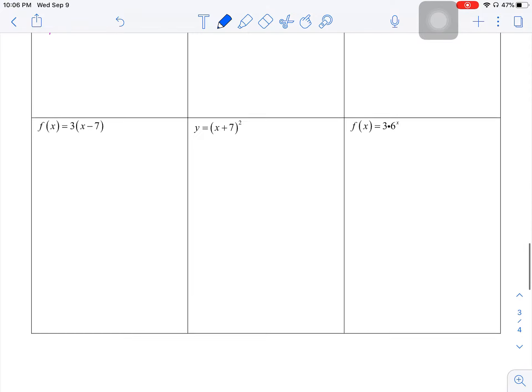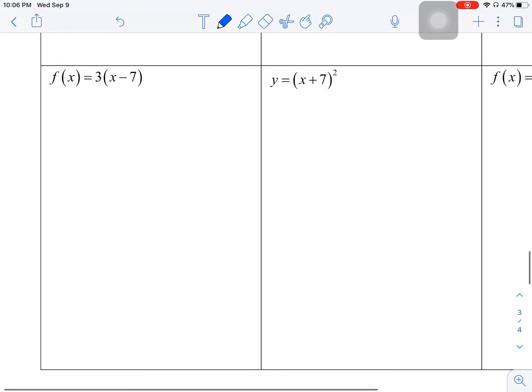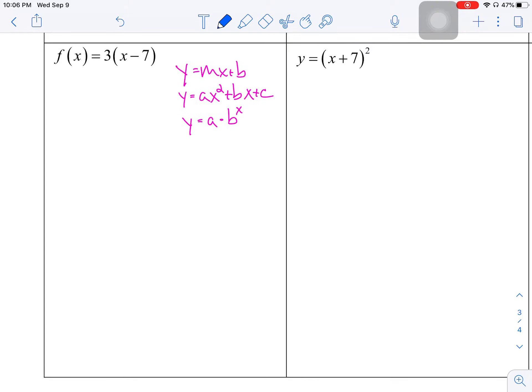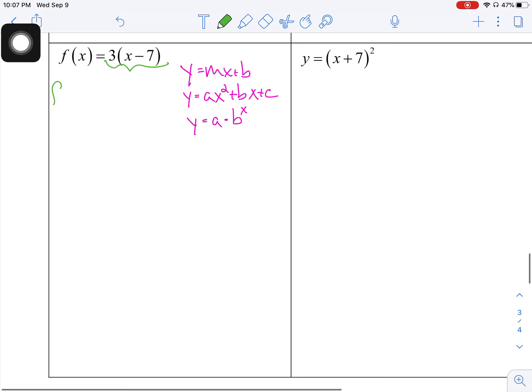We've got a couple more problems down here. So this next one, what we want to make sure that we do is we want to make sure that we simplify anything on this side of the problem. So by the way, whether it says y or f of x, it's all the same thing. So f of x equals, so I'm going to take a second and distribute here. So that gives me 3x minus 21.